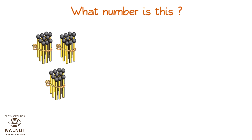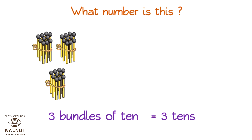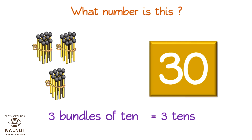What number is this? Three bundles of ten is equal to three tens. That is thirty.